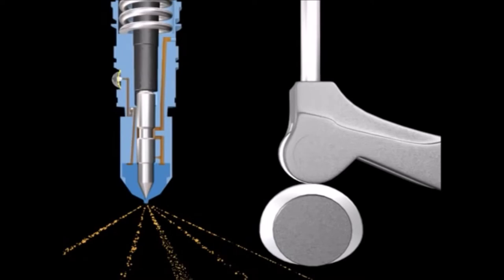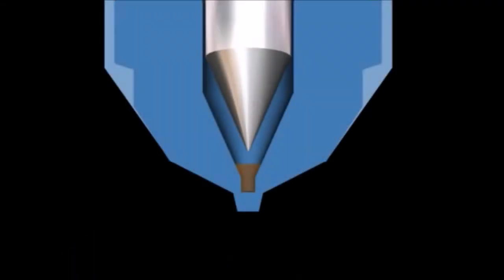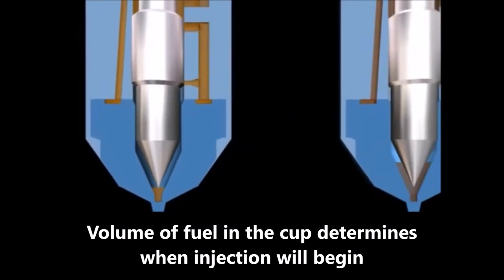Shortly after the metering orifice is closed, the drain port is uncovered. The point at which the plunger makes contact with the fuel is determined by the volume of fuel in the cup.